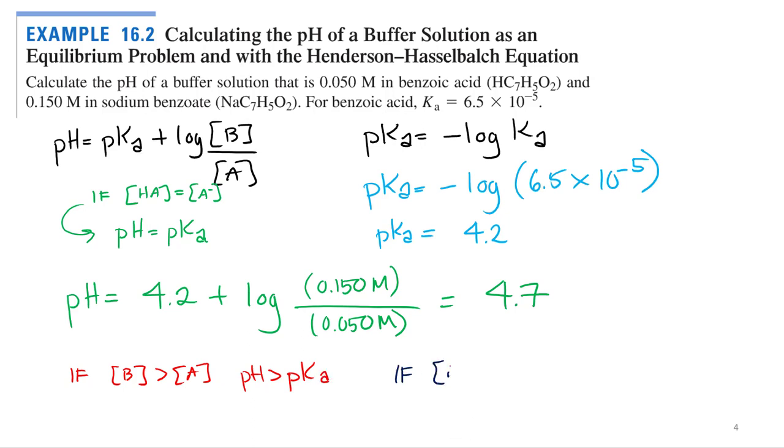So if the concentration of the base is greater than the acid, pH will be greater than the pKa. If the concentration of your acid is greater than the concentration of your base, the pH will be less than the pKa.